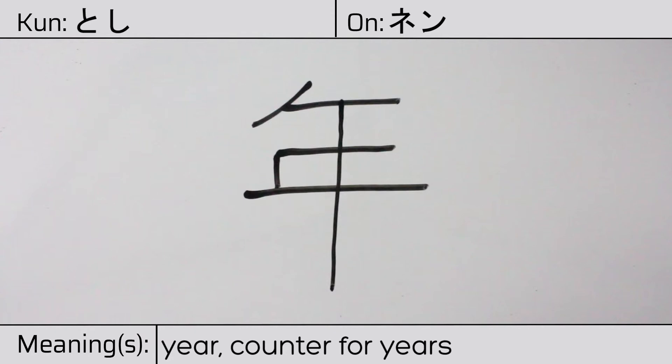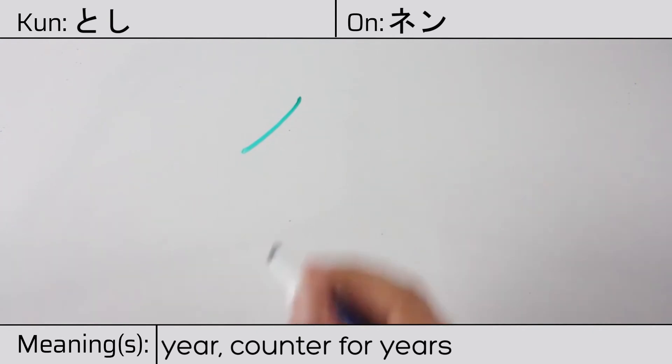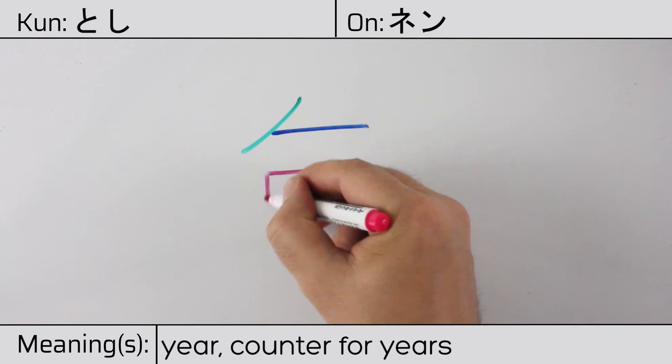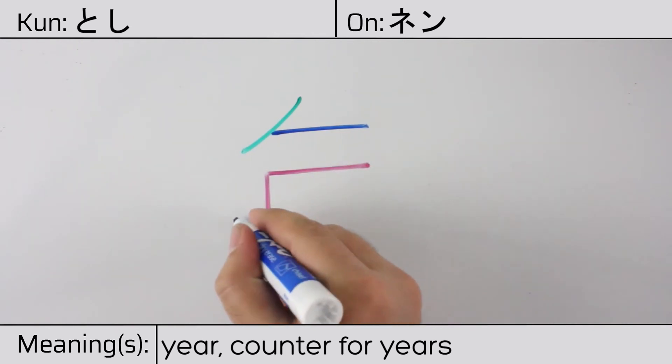This character is made up of the following radicals or parts: Katakana no, hoshi meaning to dry or shield, and this strange part in the middle.